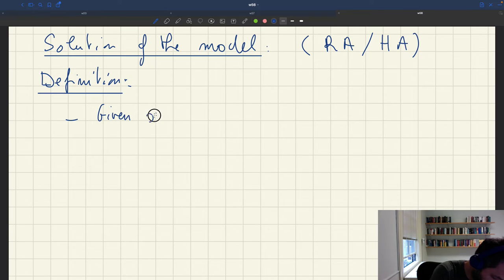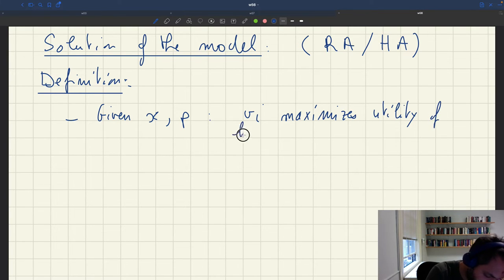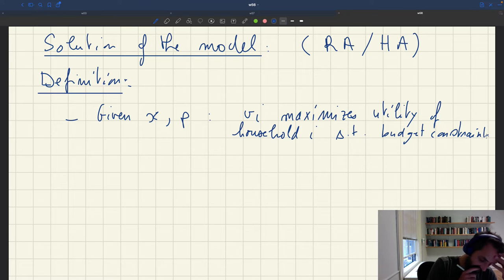So first, given x and p, so given the true tightness, vi is the number of visits, maximizes utility of household i subject to their budget constraint. Okay.